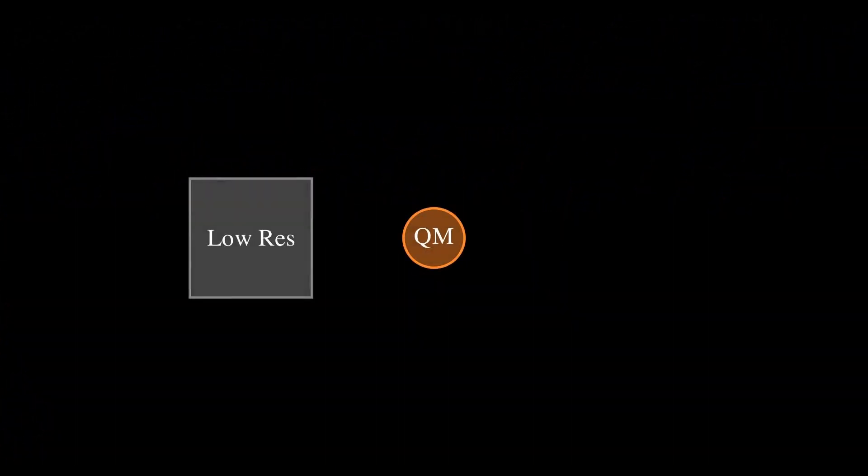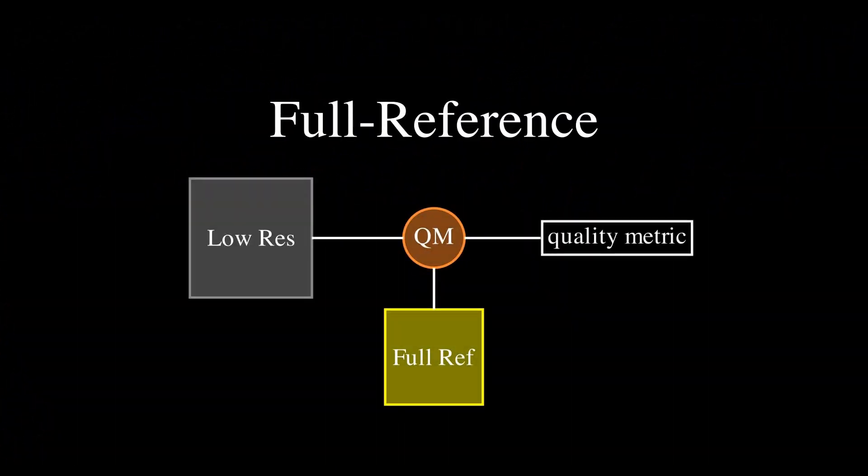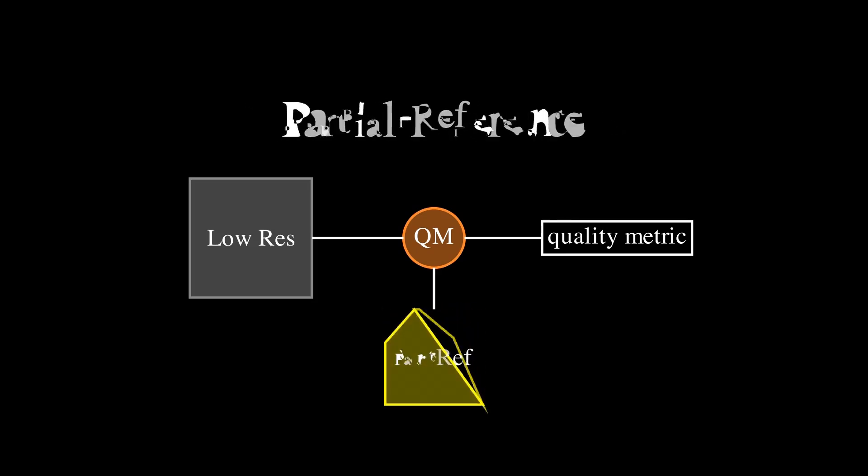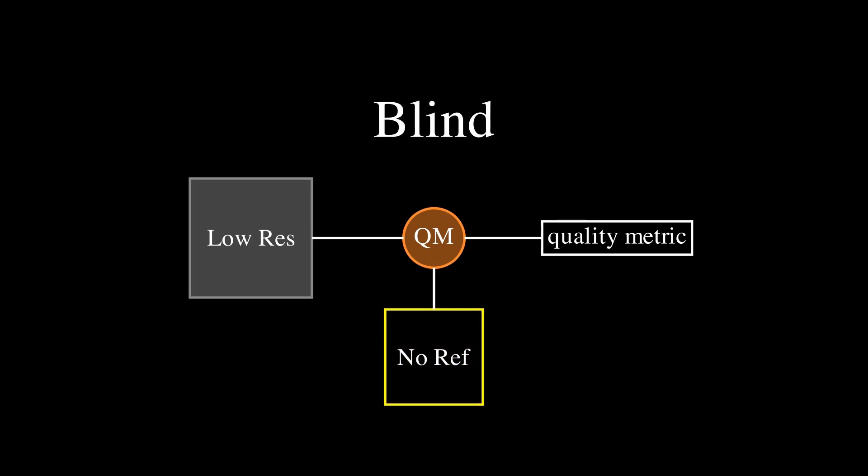Mean squared error, peak signal-to-noise ratio, and SSIM are examples of quality metrics that assume a ground-truth high-resolution image is available to compare to. This is why they are classified as full reference quality metrics. Other methods can be used in full or partial absence of a high-resolution comparison, but I won't cover them here because we're focused on a model in which we do have a reference.